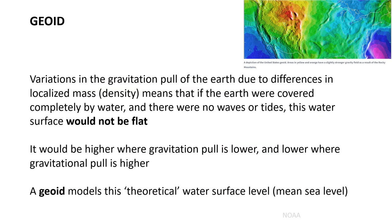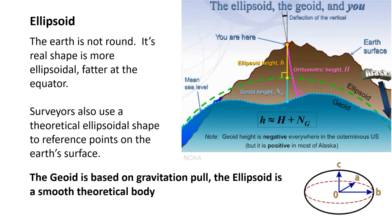That's what a geoid is — it takes into account that if the Earth were completely covered by water with no waves or tides, the surface wouldn't be flat. It's an irregular shape that accounts for the different gravitational pull at each location. That's a theoretical water surface. It's kind of the same idea as mean sea level, but updated for the 20th and 21st centuries now that we understand the different gravitational pulls.